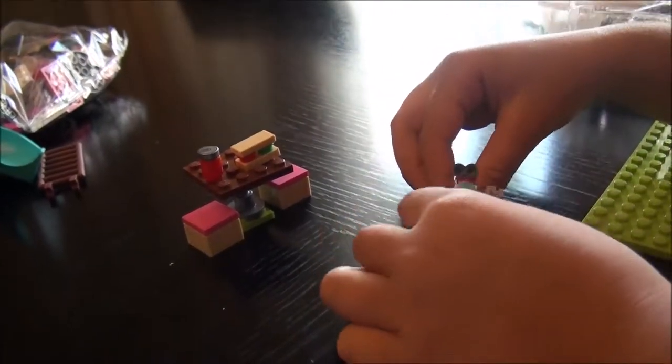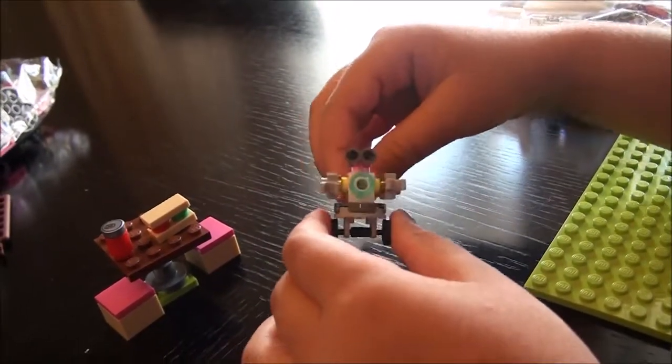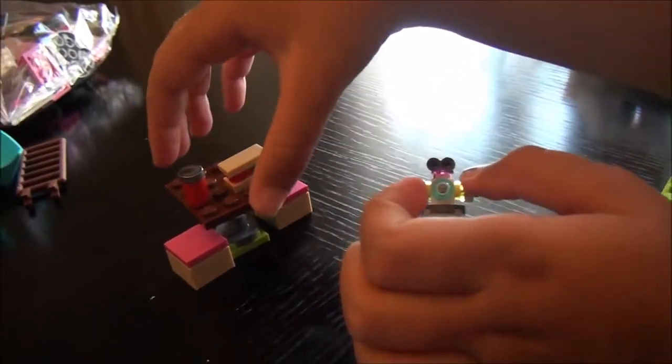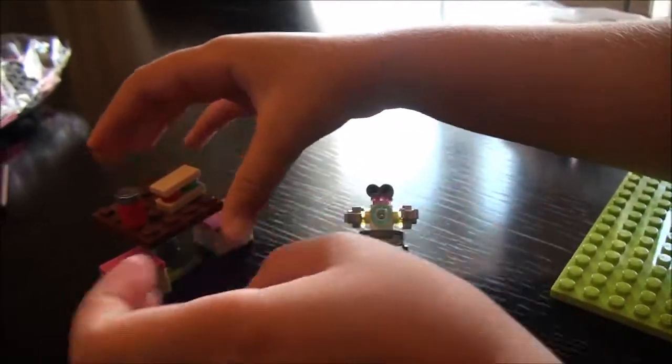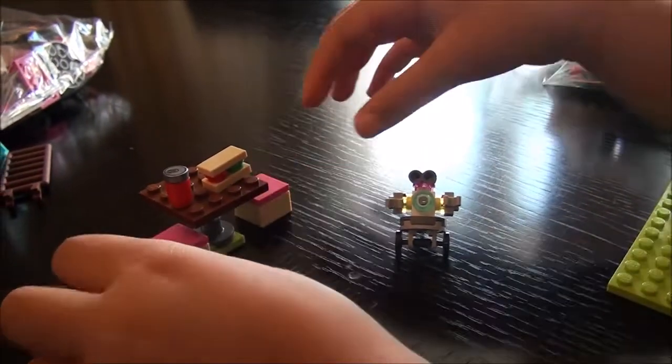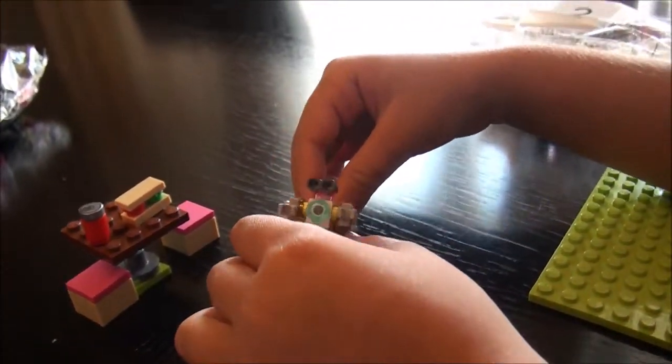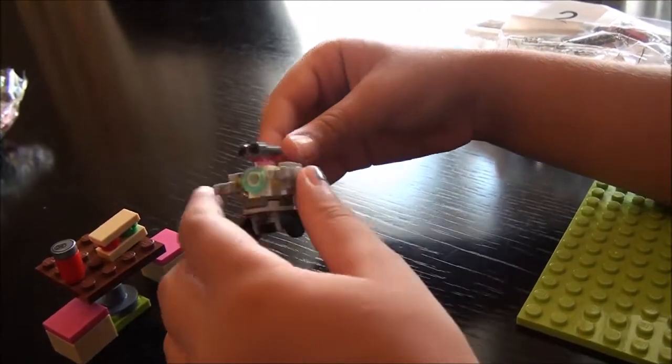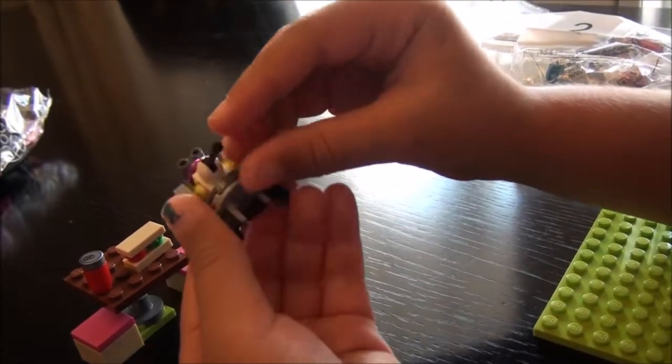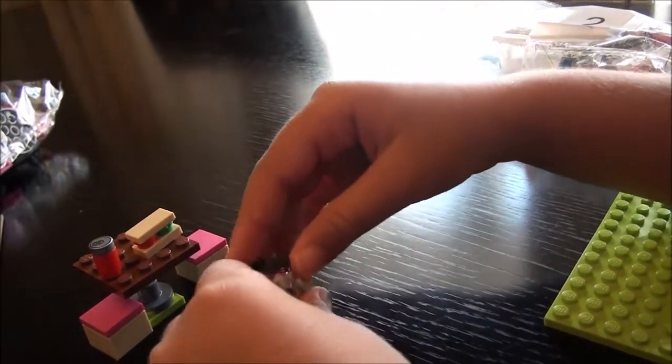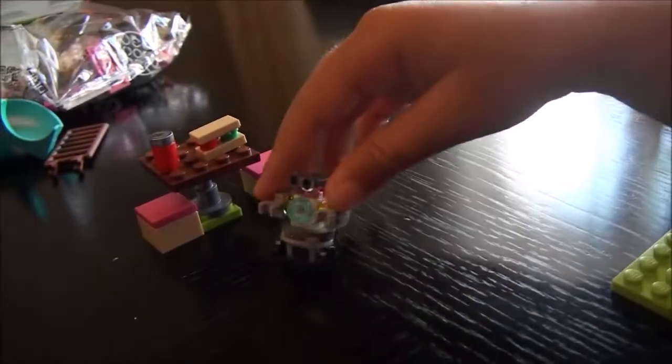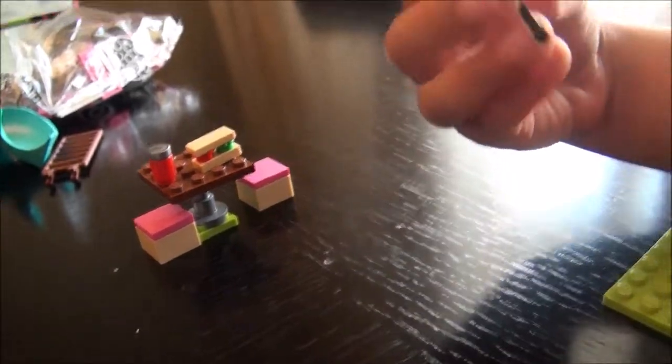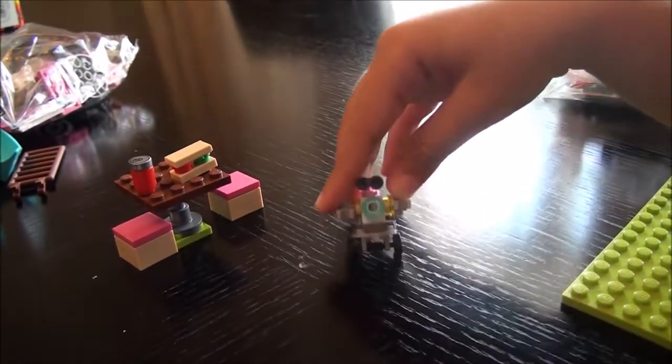So I finished building the first part. The robot and the table with this drink and sandwich. I made these two chairs. This is the robot and he has some binoculars. When you put this down, he can stand just like that. He has wheels at the bottom too, so he can go like this.